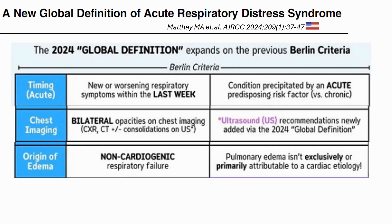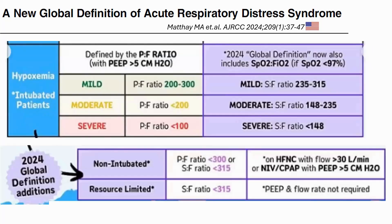Third, previously cardiogenic pulmonary edema ruled out ARDS, but the global definition says cardiogenic pulmonary edema can co-exist with an ARDS component — as seen in influenza patients with underlying lung pathology, ground-glass opacities, inflammatory changes, and B-lines. The intent is to incorporate large groups of patients. From a therapeutic standpoint, patients no longer need to be intubated to qualify; the SpO2/FiO2 ratio can now be used instead of only the PaO2/FiO2 ratio.